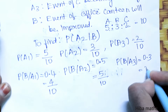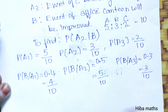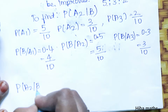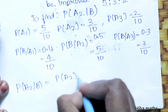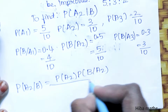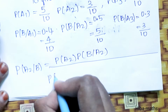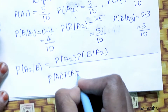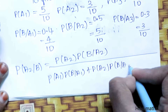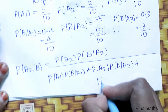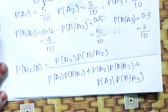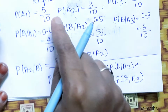Using Bayes' formula: P(A2|B) = P(A2) × P(B|A2) divided by [P(A1)×P(B|A1) + P(A2)×P(B|A2) + P(A3)×P(B|A3)]. Now substituting the values on the next page.